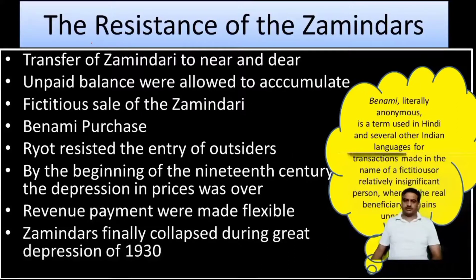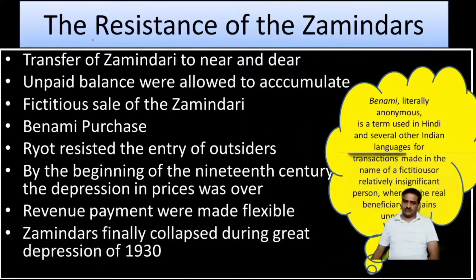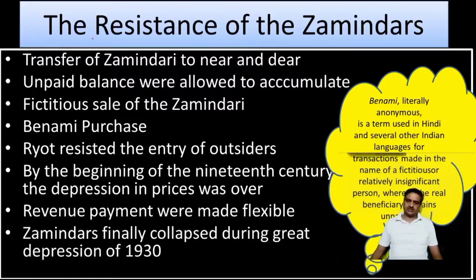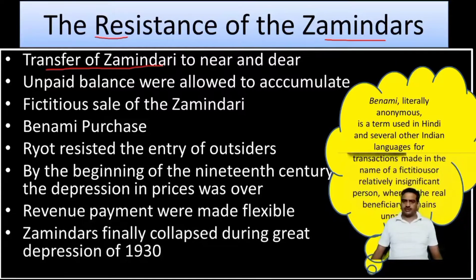The condition of the Zamindar was not good — the company's rules were designed to make him weaker, peasants were not supporting him, and the Jotedar was also hatching plans against him. The Zamindar was trapped from all sides. So how did the Zamindar find ways to survive? We will discuss the resistance strategies of the Zamindar. The first was the transfer of Zamindari to near and dear ones.